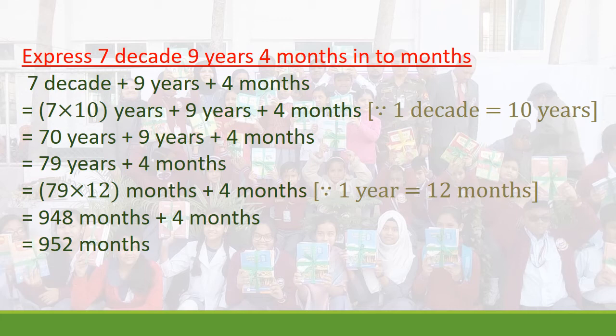Now: express 7 decades, 9 years, 4 months into months. We write: 7 decades plus 9 years plus 4 months. Equal to 7 multiplied by 10, because 1 decade equals 10 years. So: 7 × 10 years plus 9 years plus 4 months. That gives 70 years plus 9 years plus 4 months.